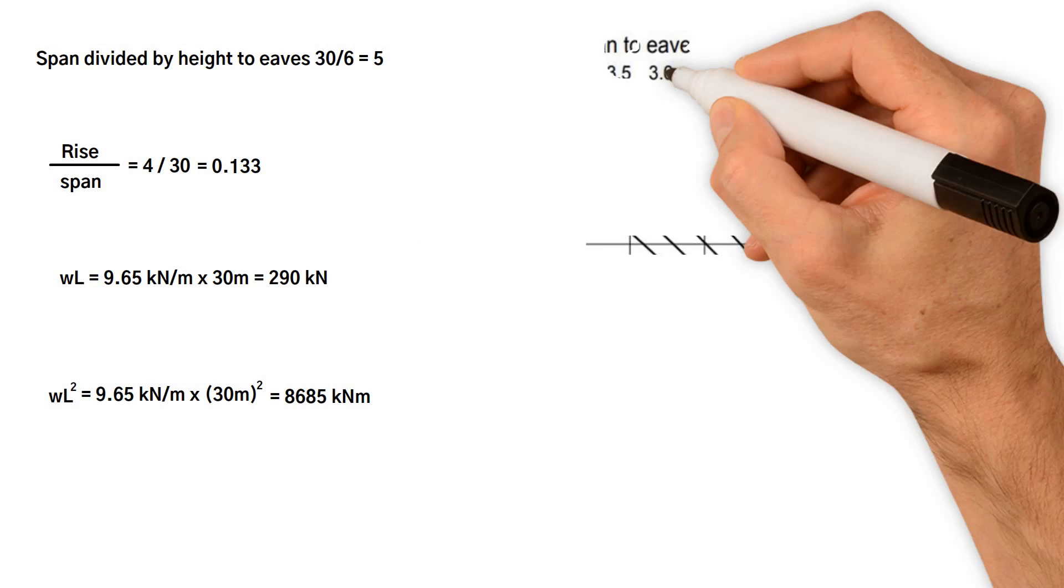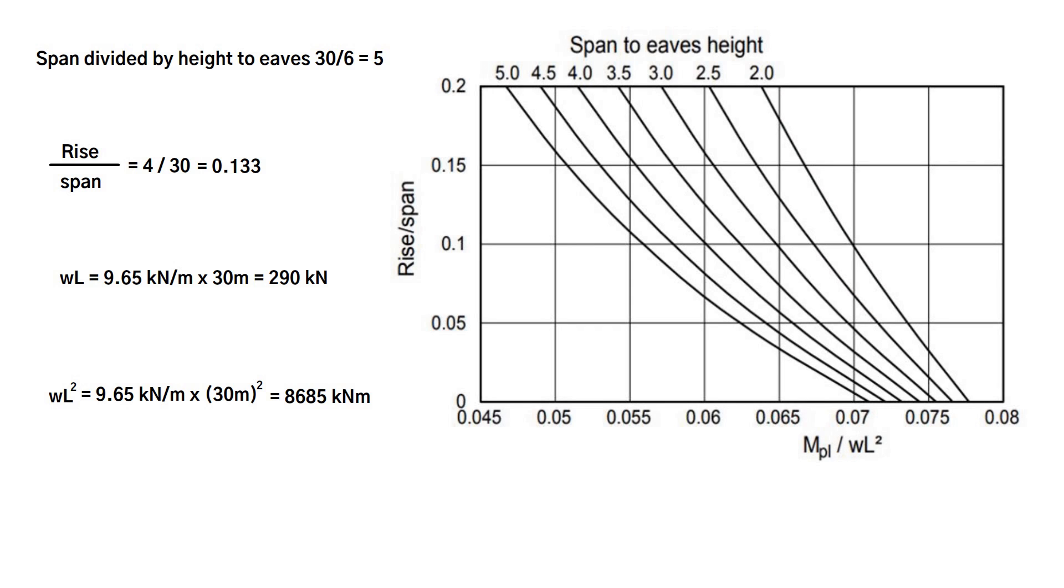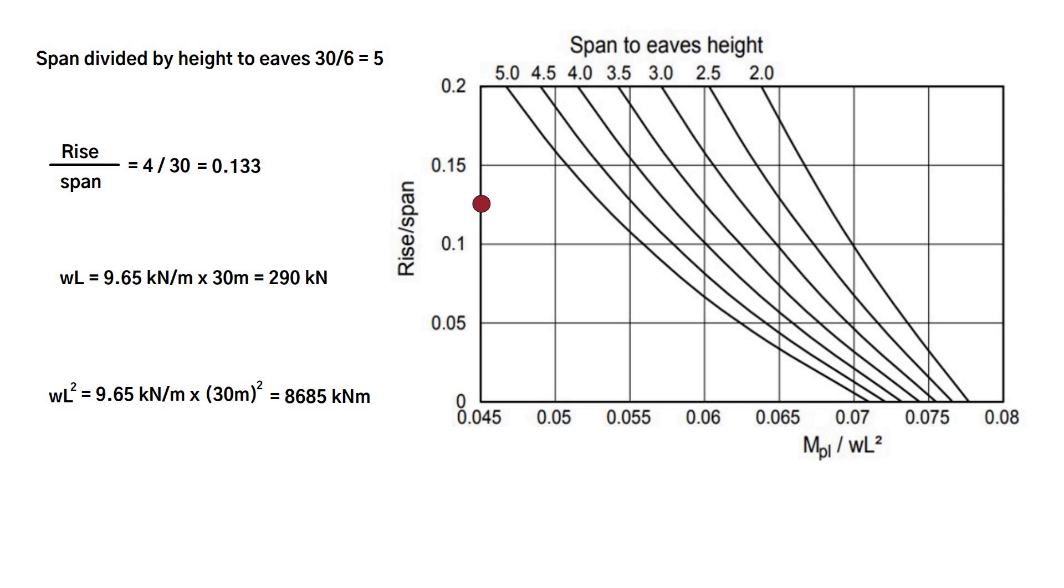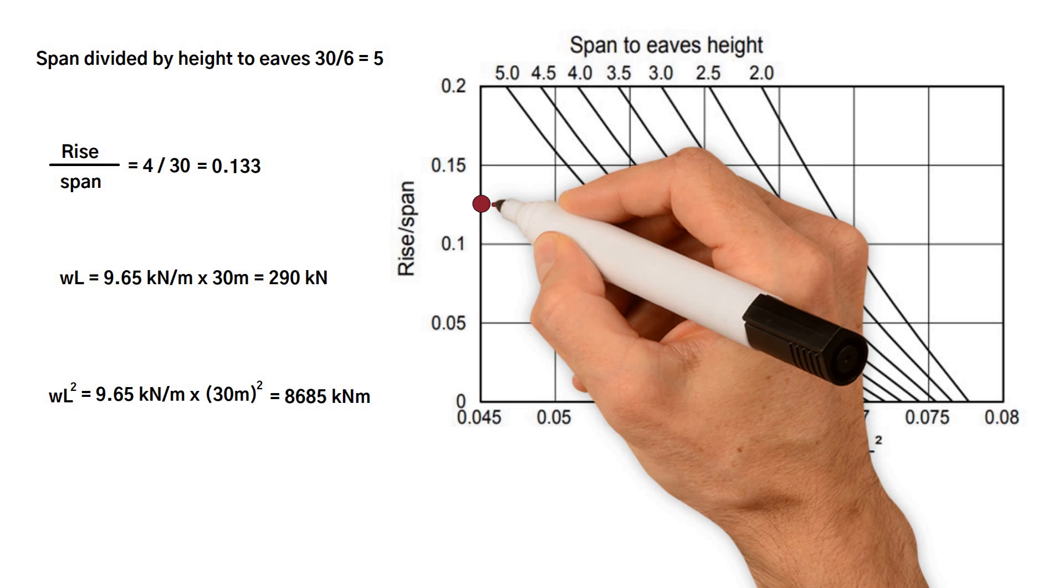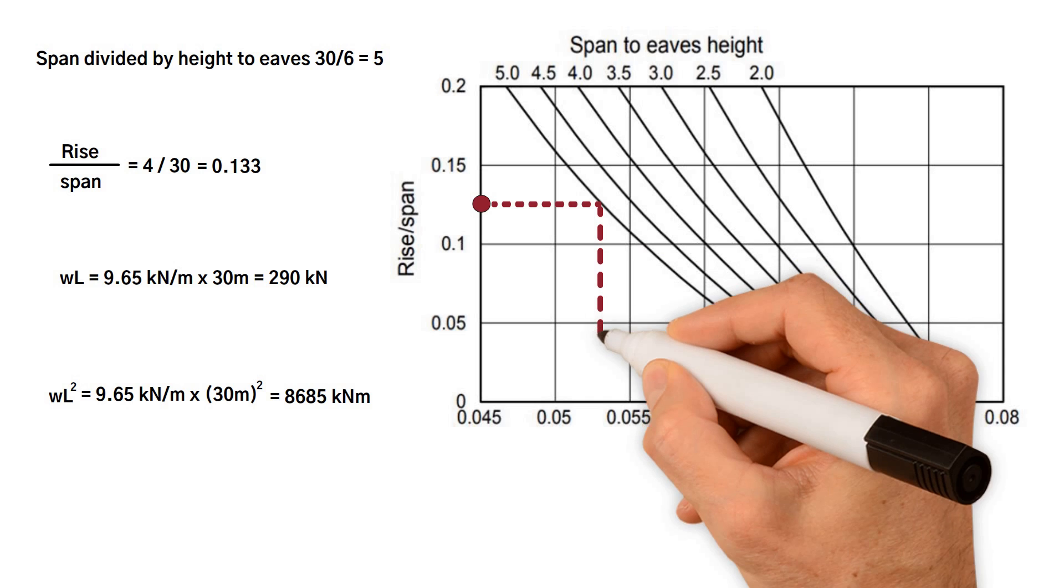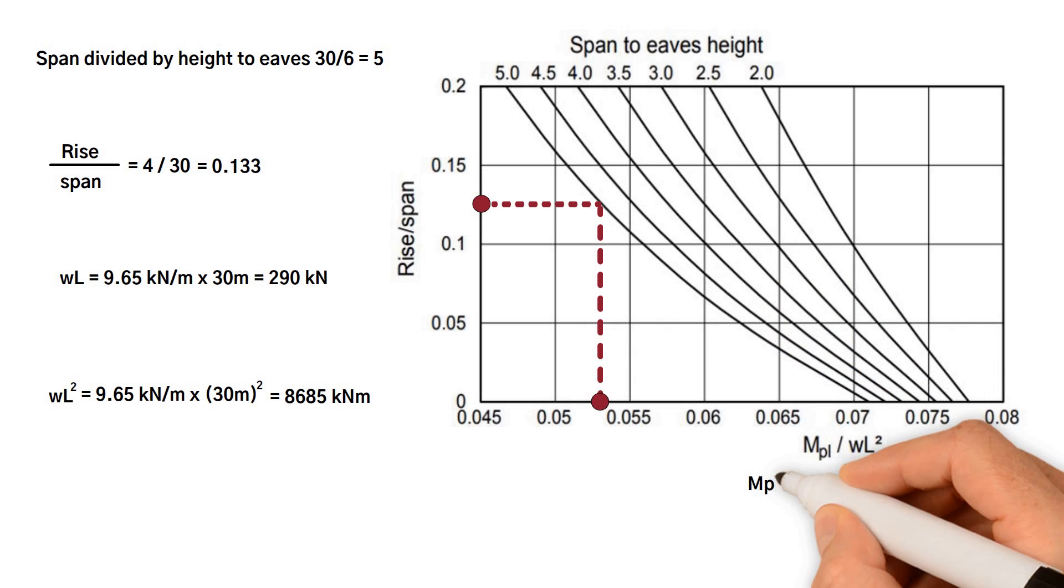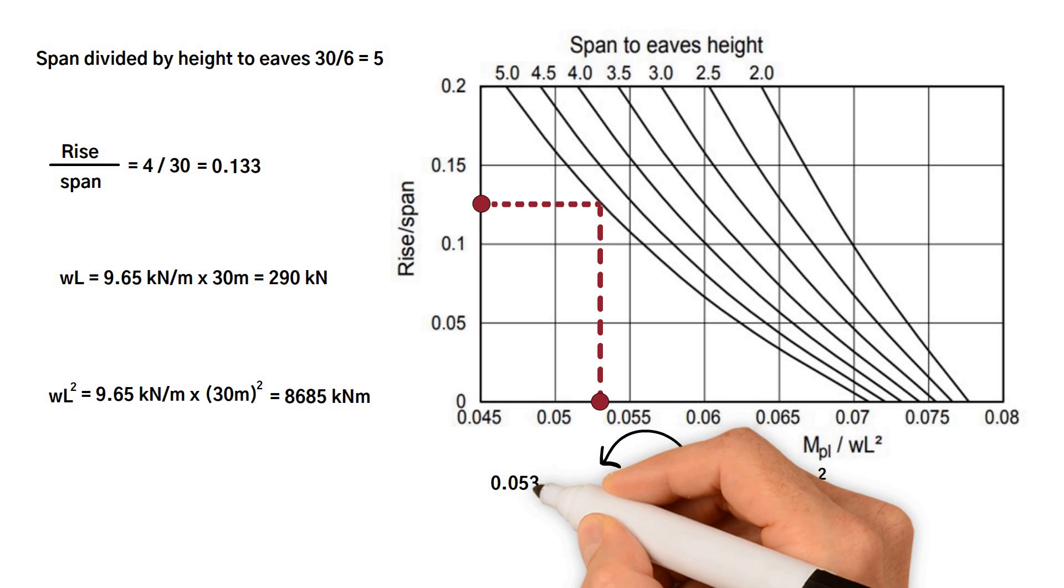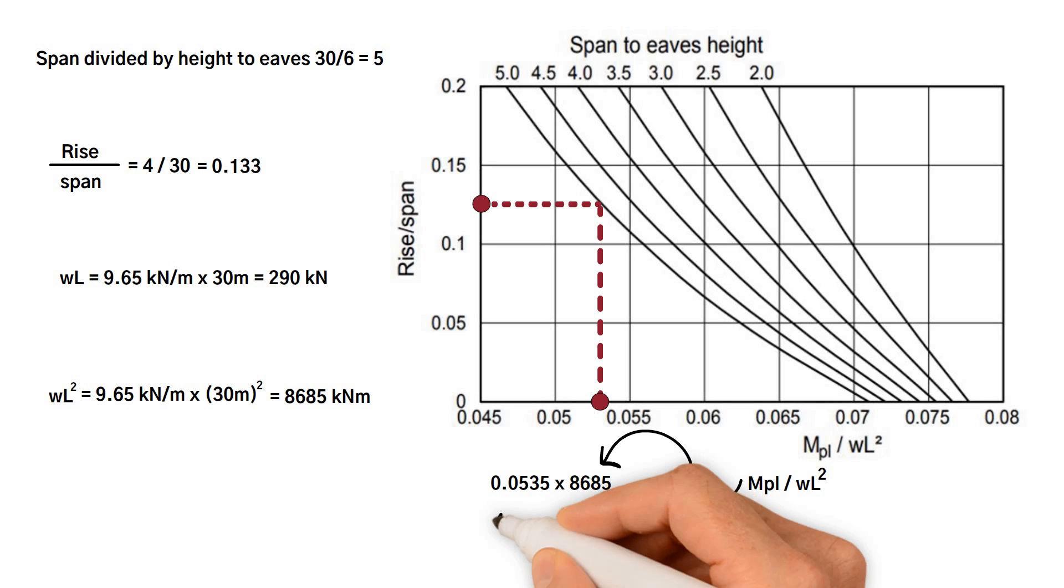Lastly, from the following graph, we need to obtain the required moment capacity of the column. Again, we have rise over span 0.133, and span to eaves 5. They should meet here, so we have the ratio MPL over WL squared equals approximately 0.0535. Therefore required moment capacity of column equals 0.0535 times WL squared 8,685 kilonewton meter, which equals 465 kilonewton meter.